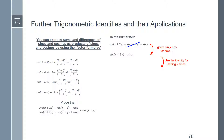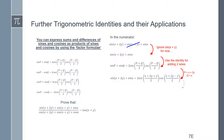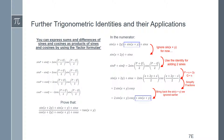Using the factor formula for two sines — sine p + sine q — with p = x+2y and q = x, we get 2 sine((x+2y+x)/2) cos((x+2y-x)/2), which simplifies to 2 sine(x+y) cos(y). Bringing back the sine(x+y) we set aside, we now have a common factor of sine(x+y), so the numerator factorises to sine(x+y)(2 cos y + 1).